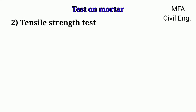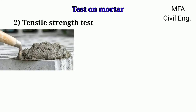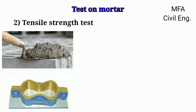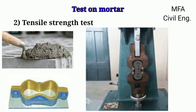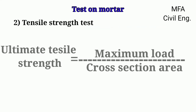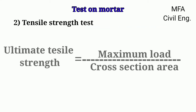In a tensile strength test, the mortar which is to be tested is placed in a briquet mold, then the briquets are tested in a tension testing machine. The cross-section area of the central portion of the briquet mold is about 38 mm by 38 mm. The maximum load at failure is noted, and the ultimate tensile strength of the mortar is found using the formula: ultimate tensile strength equals maximum load at failure divided by the cross-section area.